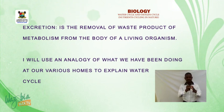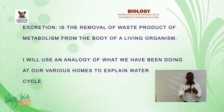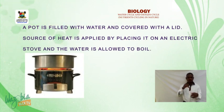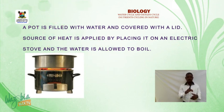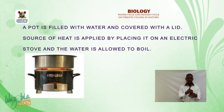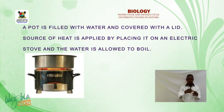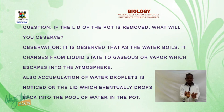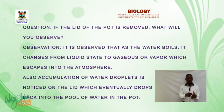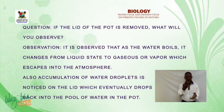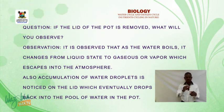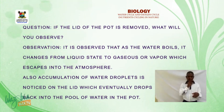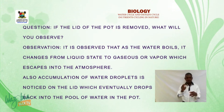I will use an analogy of what we do at our homes to explain the water cycle. A pot is filled with water and covered with a lid. A source of heat is applied by placing it on an electric stove and the water is allowed to boil. If the lid of the pot is removed, what will you observe? It is observed that as the water boils, it changes from a liquid state to a gaseous or vapor state which escapes into the atmosphere. Also, accumulation of water droplets is noticed on the lid, which eventually drops back into the pool of water in the pot.